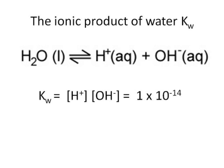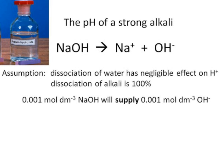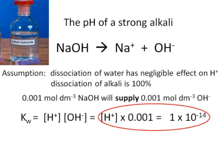We can use that to allow us to calculate the pH of a strong alkali. If we take this example, sodium hydroxide is going to dissociate 100%, so it's going to give us a full concentration of OH- ions. In this example 0.001 moles per decimeter cubed of sodium hydroxide will supply 0.001 moles per decimeter cubed of hydroxide ions. We know that the ionic product of water is 1 times 10 to the minus 14, and that is therefore going to be equivalent to the concentration of H+ multiplied by 0.001.